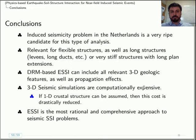Now to the conclusions. In my opinion, the induced seismicity problem in the Netherlands is very amenable to this type of analysis. This is going to be relevant for your flexible structures as well as long structures, which might see many cycles of wavelengths for the waves involved. DRM-based ESSI can include all 3D effects as well as propagation effects. The 3D seismic simulations required are computationally expensive, but as I mentioned, this can be reduced for the problem in the Netherlands. And additionally, if you have a 1D crustal structure, then this cost is further brought down. Finally, our approach, we think our approach to SSI is the most rational, comprehensive approach you can have, and it's basically the state of the art at this moment.